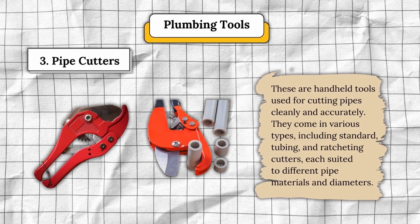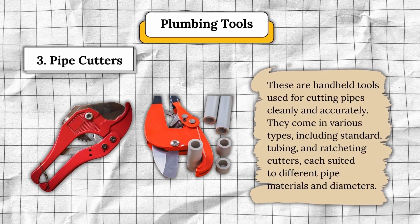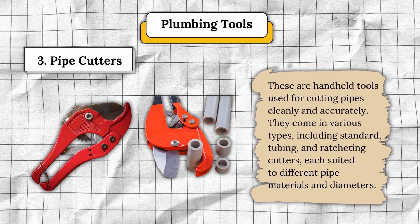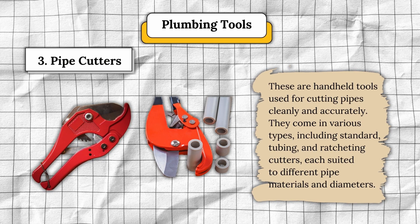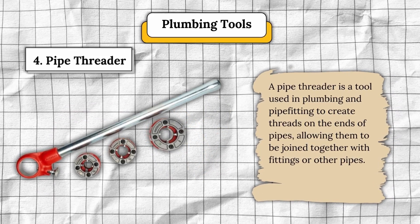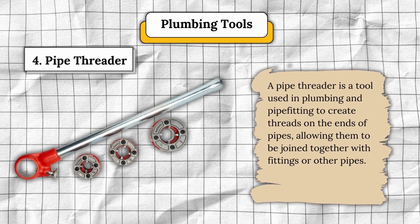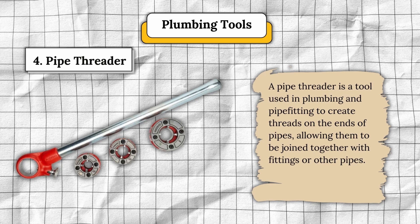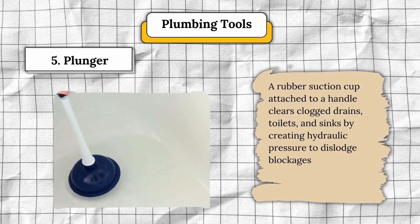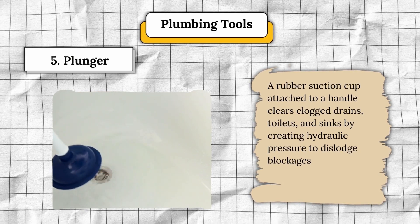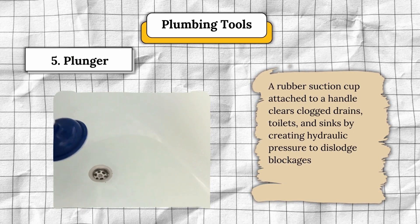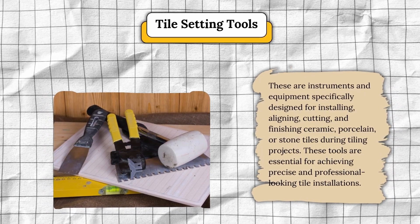Number four, pipe threader — a tool used to create threads on the ends of pipes, allowing them to be joined together with fittings or other pipes. Number five, plunger — a rubber suction cup attached to a handle that clears clogged drains, toilets, and sinks by creating hydraulic pressure to dislodge blockages.